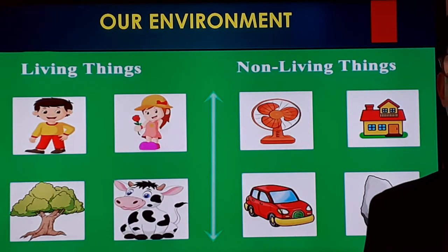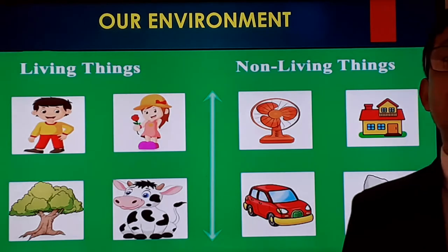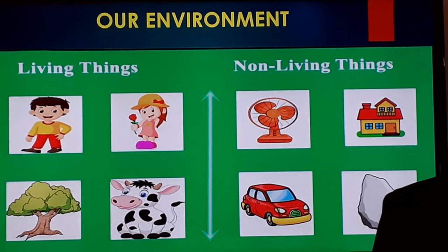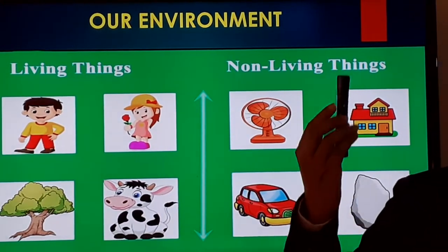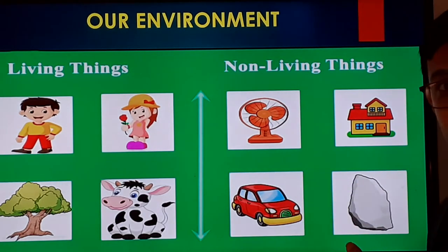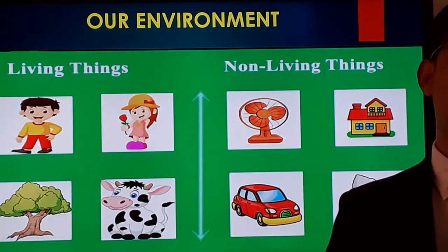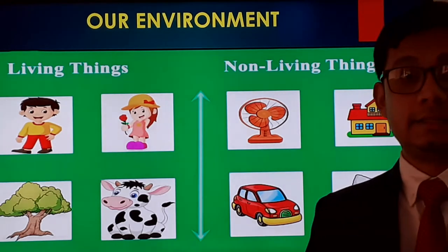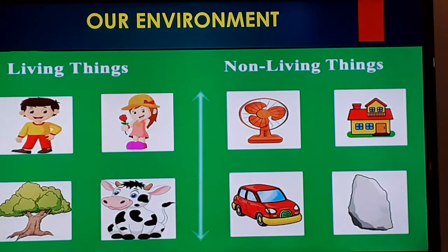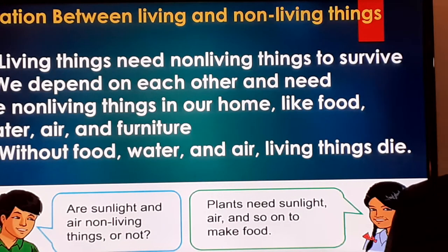Now let's come to the next category: non-living things. Examples of non-living things include a fan, houses, cars, stones, and many more. Even the smart card I'm holding and the TV you can see are non-living things. We are all dependent on non-living things, so our next discussion topic will be the dependence on non-living things.